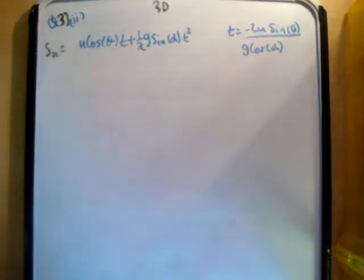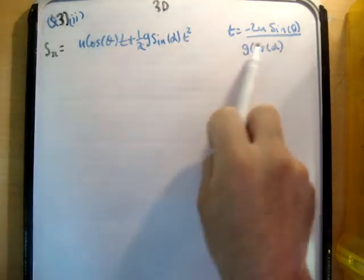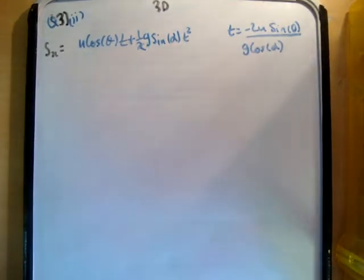So if you look at question 3 part 2, we would have worked out an expression for S of X, and at the very end we worked out a time for the maximum flight or the maximum range. So now we're asked to maximize the angle theta to give us the maximum range. So we're saying, well, what angle will give us the maximum range?